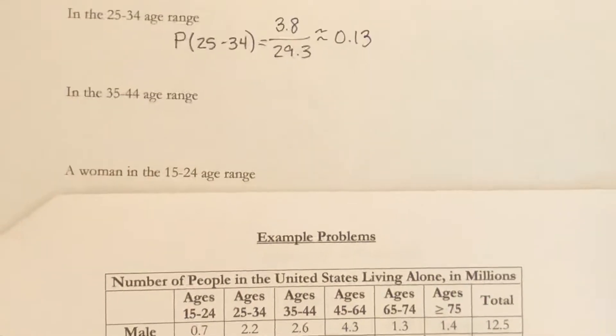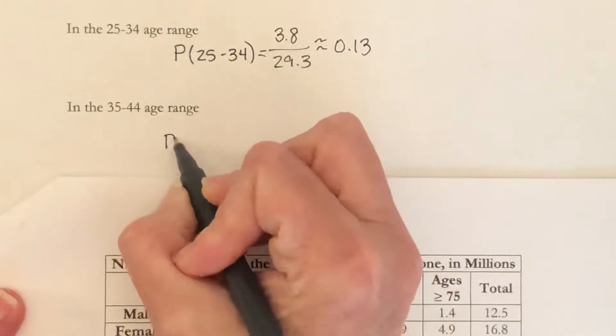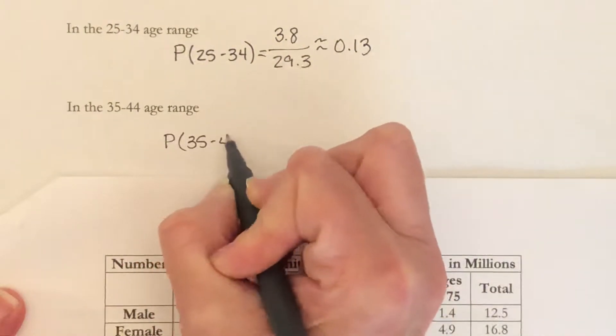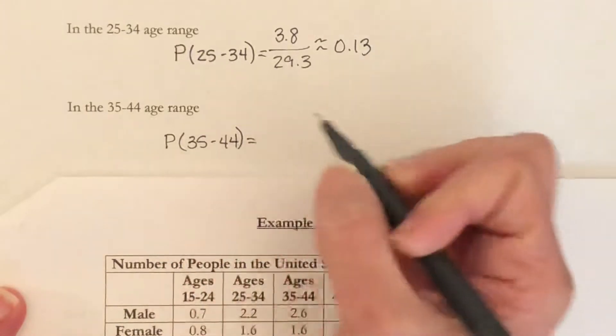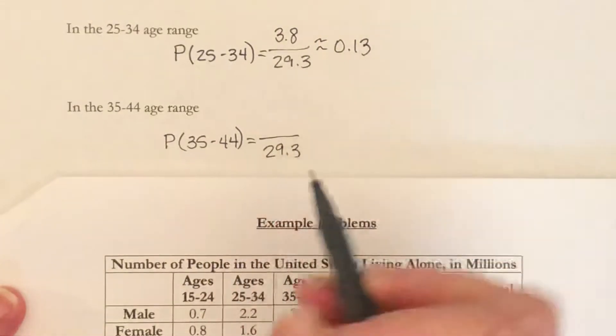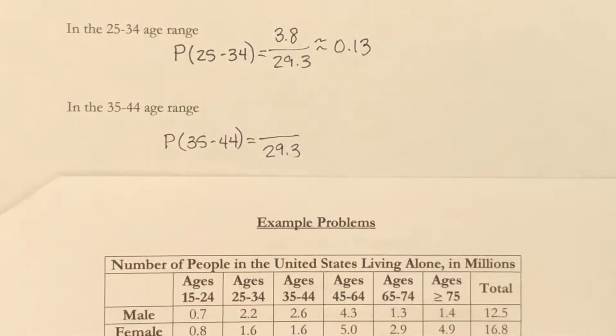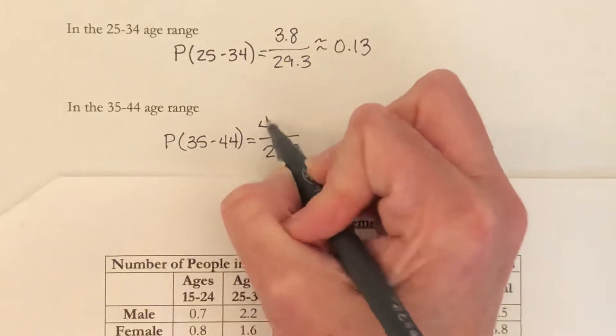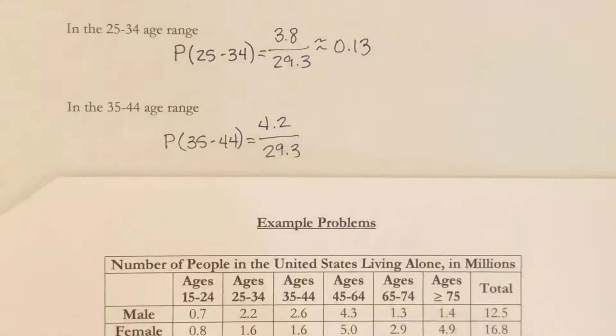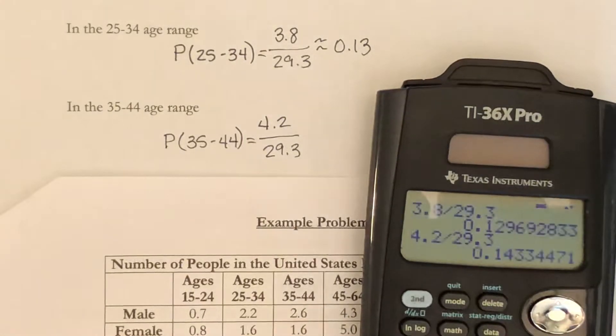What is the probability that they are in the 35 to 44 age range? There are still 29.3 million people. The 35 to 44 range, that's here, the total is 4.2. Divide 4.2 by 29.3 to get approximately 0.14.